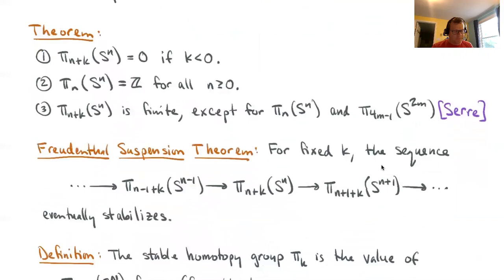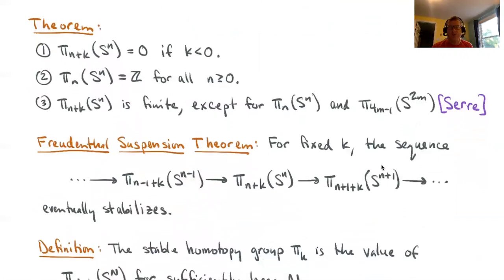Going deeper, there's another structural result about these unstable homotopy groups called the Freudenthal suspension theorem. First, fix a k and consider this sequence. Here's π_{n+k}(S^n) that we've already been talking about. If we suspend both the source and the target, we increase their dimensions by one and we map to π_{n+1+k}(S^{n+1}), and similarly, this group in one dimension lower maps in. You get this infinite sequence that extends forever to the right.